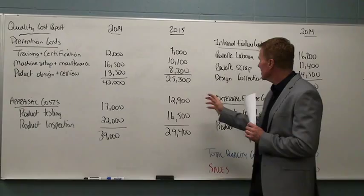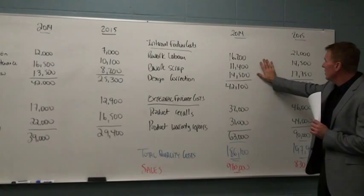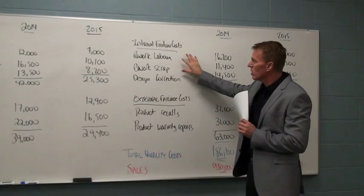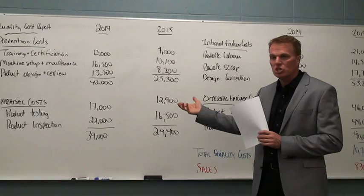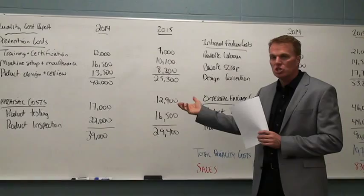So overall, this is what the quality cost report in this example is showing us. You can even see here that in the internal failure costs, our costs are starting to rise because rework is going up and we're having to make corrections to our designs. What this report is overall showing is that we need a shift — a shift of spending money from here to spending money here. And that's something that the company needs to learn.